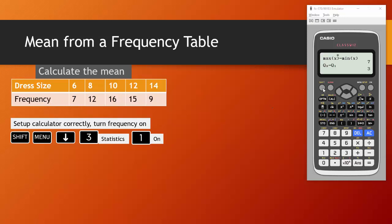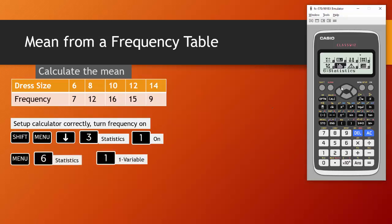To do this you will press shift and menu which takes you into the setup screen. Scroll down until you get to option three statistics and this time turn frequency on. Once you've done that you can go into menu like before, option six for statistics and we are still doing a one variable calculation.